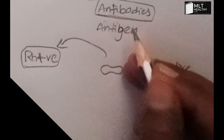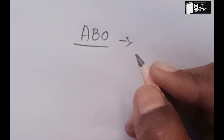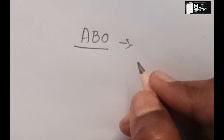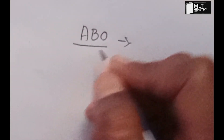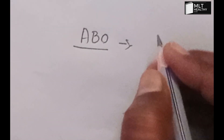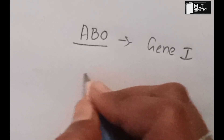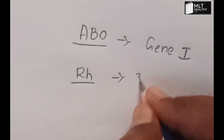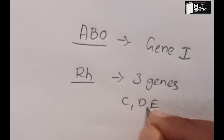In general, the ABO blood group system is controlled by gene I. The Rh group system is controlled mainly by three genes: C, D, and E.